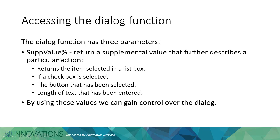The third value is the supplementary value — a supplemental value that further describes a particular action. It returns the item selected in a list box (returning 0, 1, 2, 3, etc.), indicates if a checkbox is selected, indicates which button was selected, and also indicates the length of text entered in a text box. By using these three variables together you can gain fairly good control of your dialog.